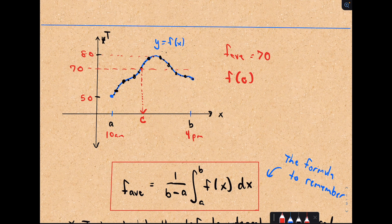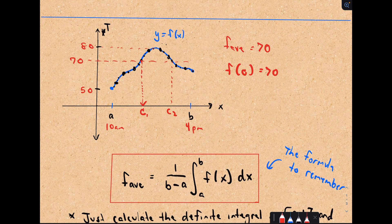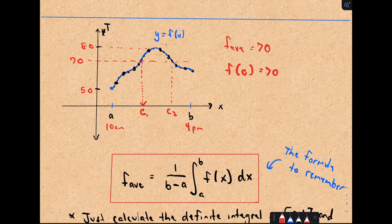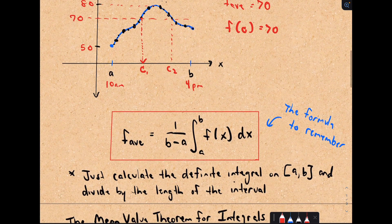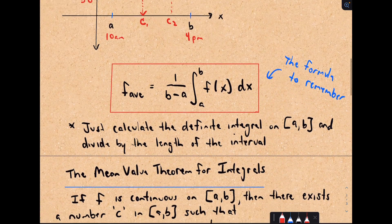So notice that value of c would equal 70. According to my graph, it looks like there's even more. But it says there's at least one. There could be infinitely many, there could be a bunch, but at least one. And again, that's intuitive. If it goes from 50 to 80, the average is 70, there's some time when it's got to be 70 degrees.